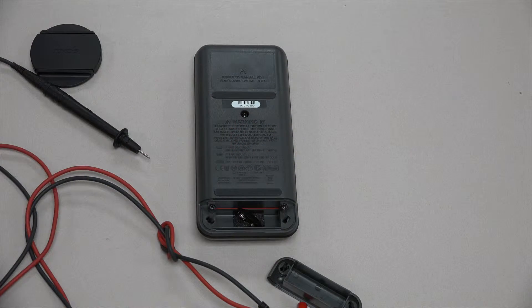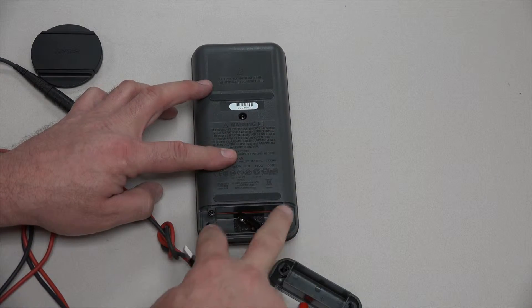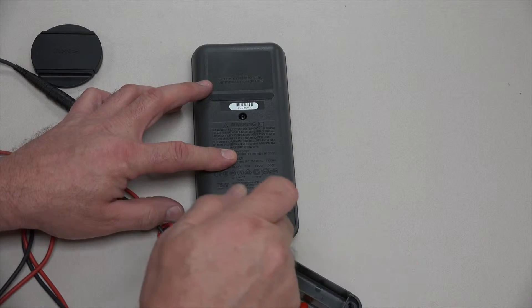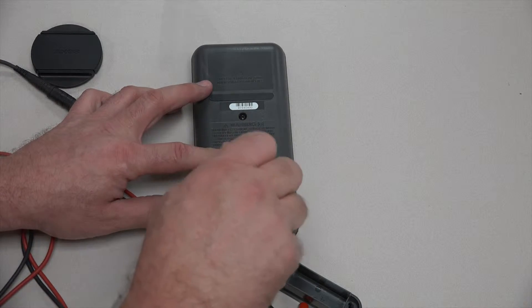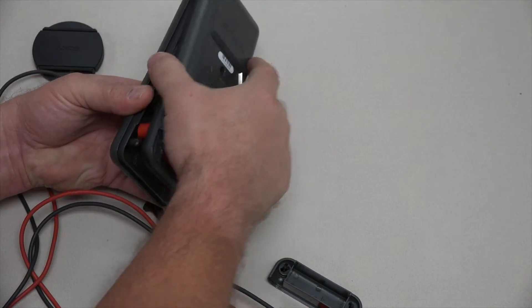There are three screws then that I need to remove to pull the back off so I can access the fuse. Three little plastic Phillips screws. They're not plastic screws, but they thread into plastic. Now, I said at this point I can separate the covers.